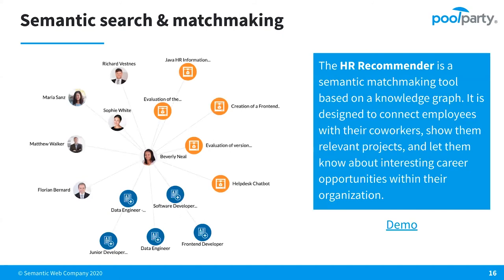This is an example of a recommender system you can try out online — it's a demo centered around HR processes. Here we have not only the inference mechanism but also semantic search and recommender engines. The inferencing mechanism built in here works like this: when a certain person, like Beverly Neal, has a CV that talks about a certain occupation they had before, then we can infer that certain skills must be relevant to them, and that an open position is interesting to that person. This is a kind of inferencing each recruiter would do automatically, but the machine typically cannot do that — you need a knowledge graph running in the background to come up with really good matchmaking algorithms and recommender services.